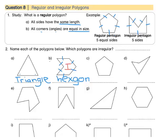We're going to note which polygons are irregular. B is irregular, so I'm going to write B there. If we look at C, we're going to count the sides: 1, 2, 3, 4, 5. This is a pentagon, and this is our regular pentagon. It has 5 straight sides, all of these sides are equal, and all of the angles are the same. So this one is regular.